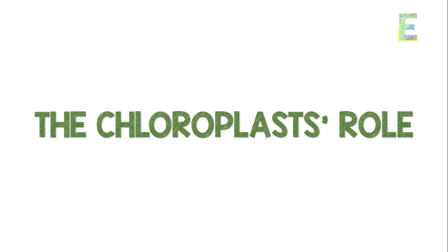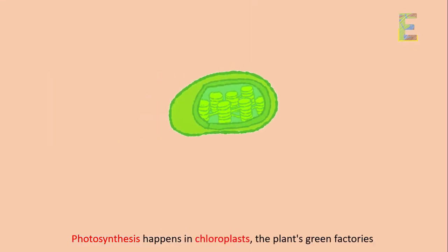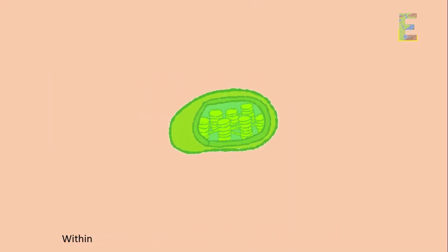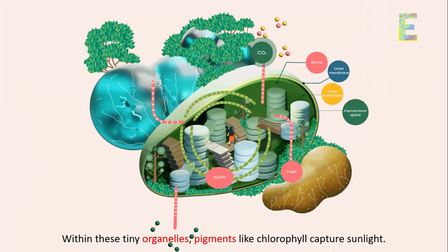The chloroplast's role. Photosynthesis happens in chloroplasts, the plants' green factories. Within these tiny organelles, pigments like chlorophyll capture sunlight.